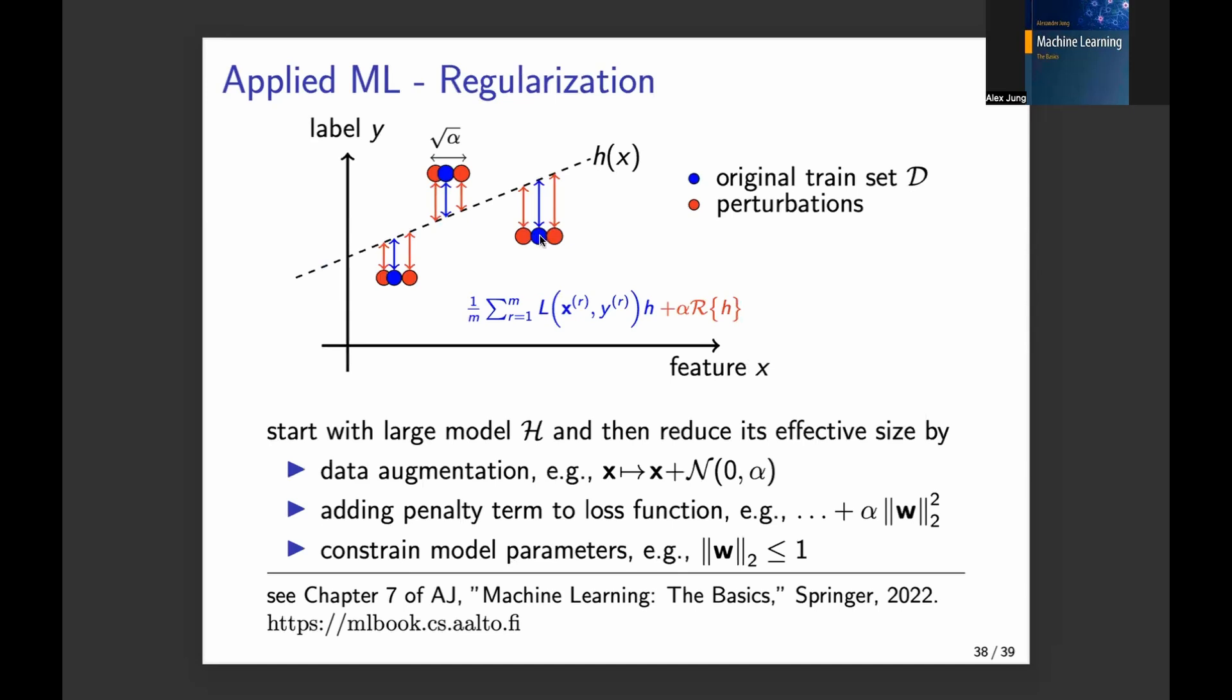So you say, instead of observing a data point with feature value 3, I could also have observed a data point with feature value 3.2, because these feature values might come from a noisy sensor, which by itself has only some tolerance level up to 2% error tolerance or something. So you could say, naturally, it would make sense to add to each original data point a slightly perturbed version.